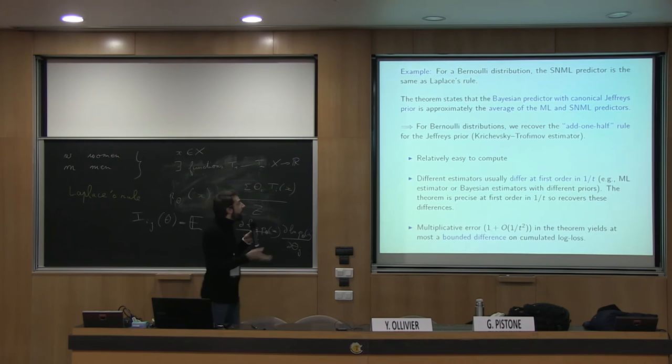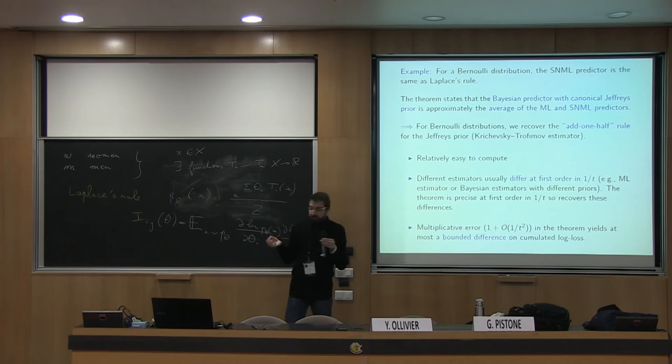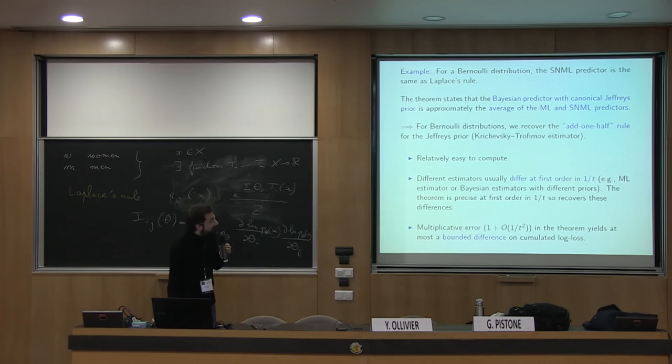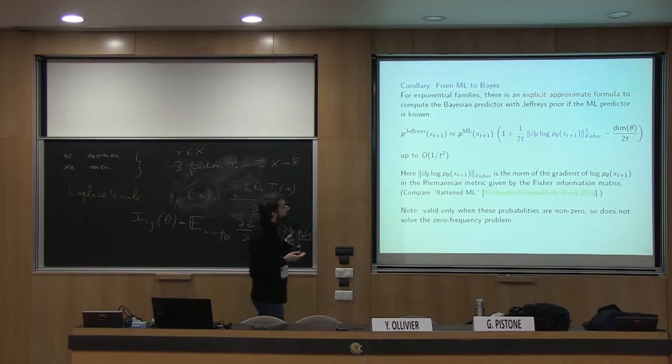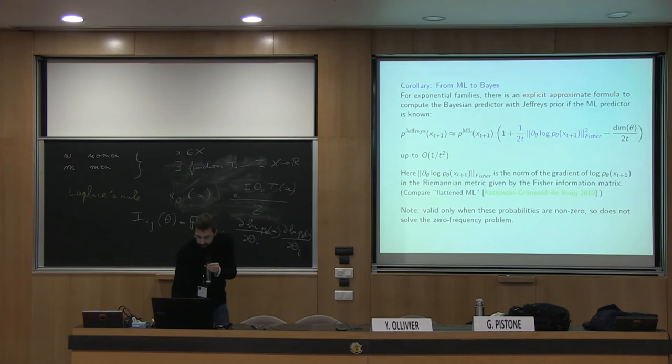This is relatively easy to compute. We get the 1 over t term right in the theorem. The remaining error is 1 over t squared, which since it's summable contributes only a finite difference on cumulative log loss. In particular, we get a new explicit formula for how to modify the ML predictor to get the prediction of the Bayesian prior with Jeffreys prior. The correction to incorporate is given by the norm of the gradient of the new data in the Fisher information metric.